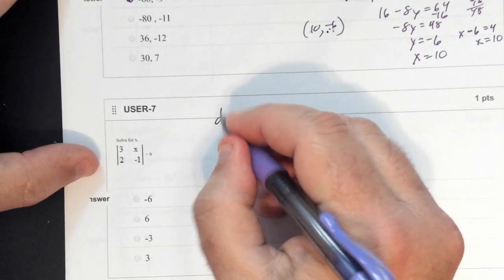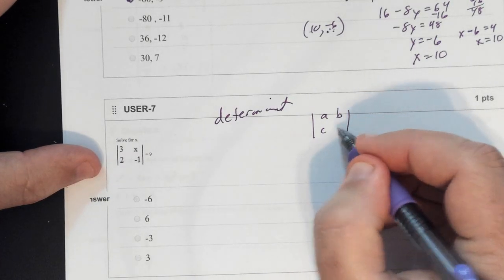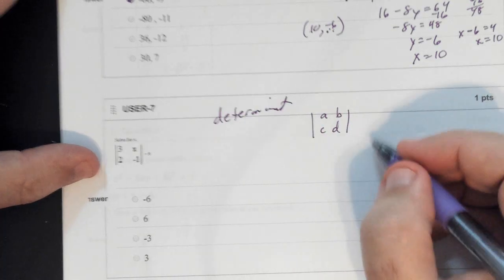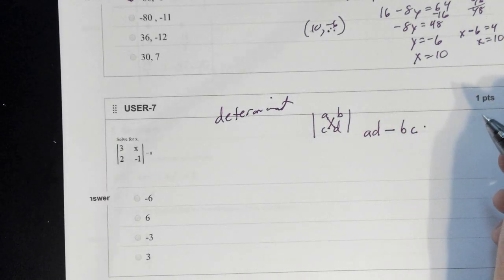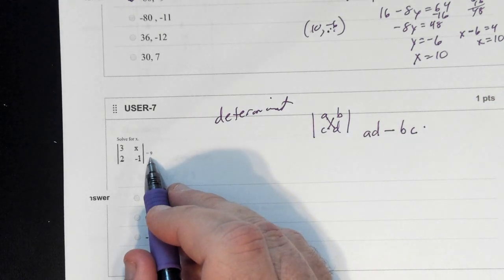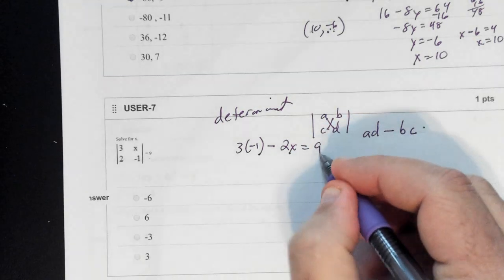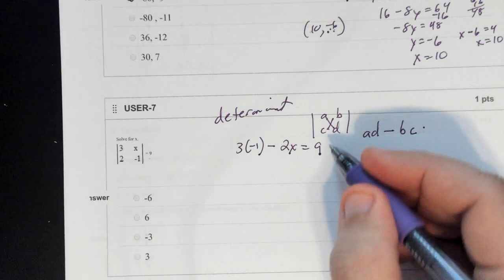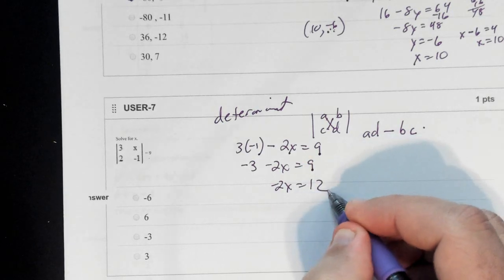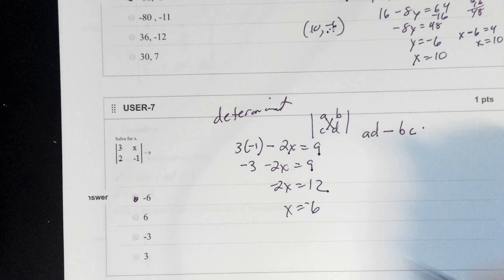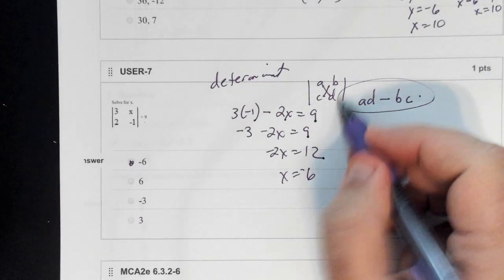For a determinant of a 2 by 2, the formula is A times D minus B times C. Here the determinant equals 9, so: 3 times negative 1 minus 2 times x equals 9. That's negative 3 minus 2x equals 9. Add 3 to both sides: negative 2x equals 12, so x equals negative 6.